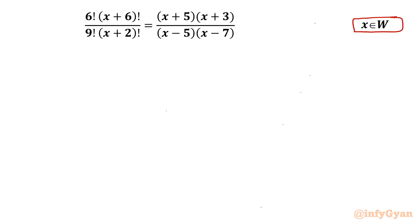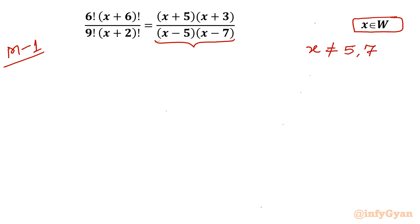Let me begin with method number 1 and write my domain. The RHS denominator cannot be 0, so x cannot be equal to 5 or 7. From the whole number list I will restrict these two values, 5 and 7.